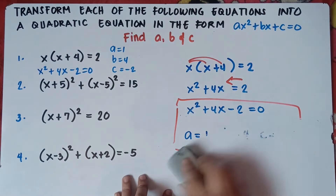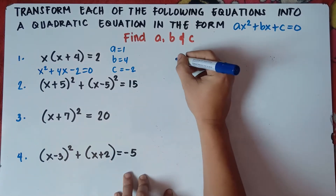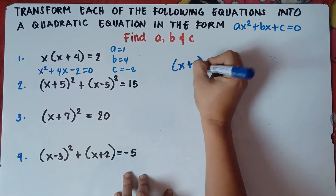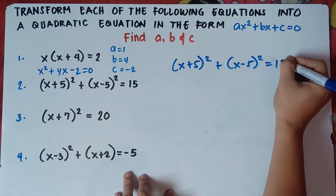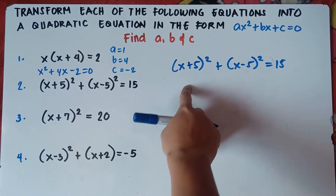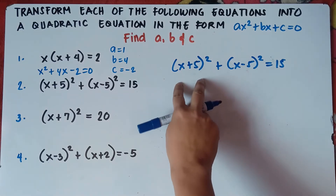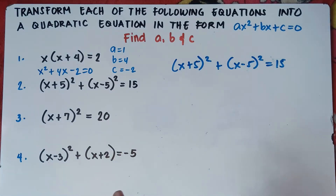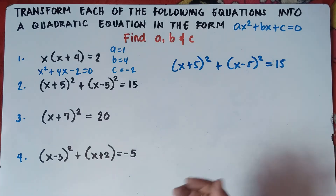Alright, so let's try number 2: (x + 5)² + (x − 5)² = 15. This is what we call the square of a binomial. You have two solutions: you can do the FOIL method, or you can do the square of a binomial. I'll be explaining both so you really understand how to solve this. Let's do the FOIL method first.